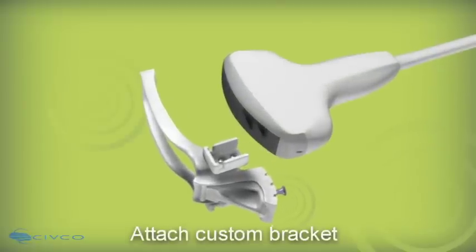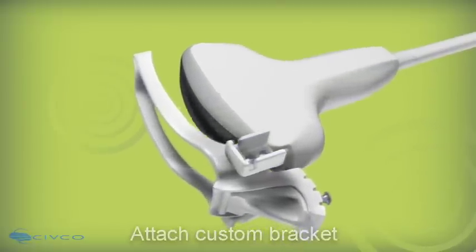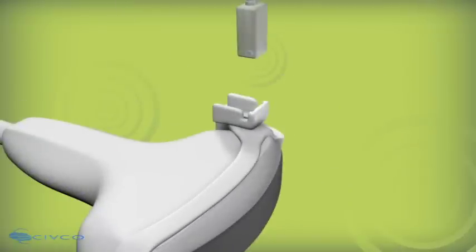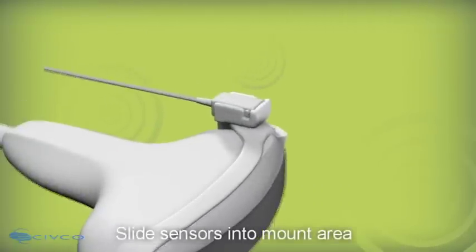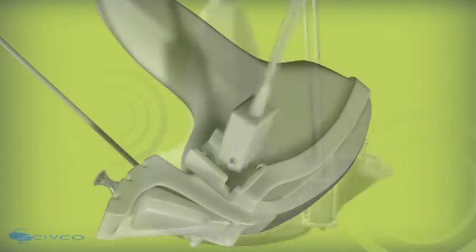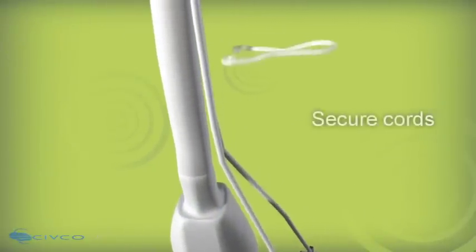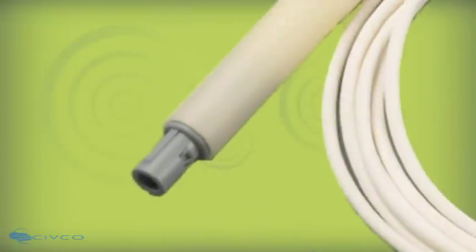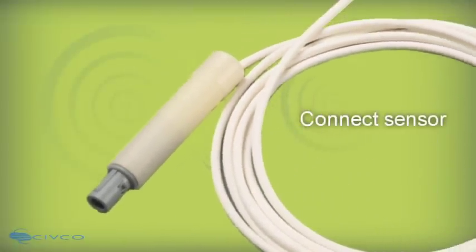First, attach the custom reusable non-sterile bracket to the transducer by aligning the locating features. Then slide the non-sterile reusable general purpose sensors into the designated mount area on the bracket. Secure the sensor cord to the transducer cord with the probe clips. Next, connect the sensor into the tracking panel on the ultrasound system.